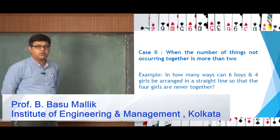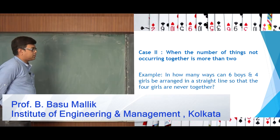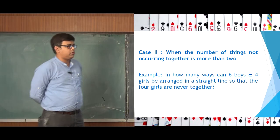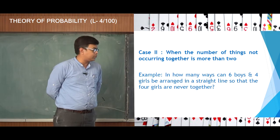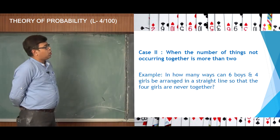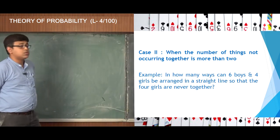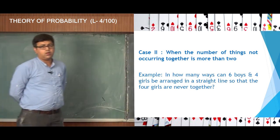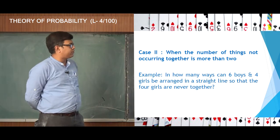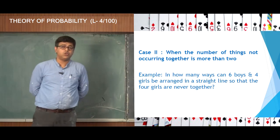Welcome to the series on theory of probability. In the last class we were discussing restricted population and discussed the first case when the number of things not occurring was 2. Now it can happen that the number of things not occurring together is more than 2.